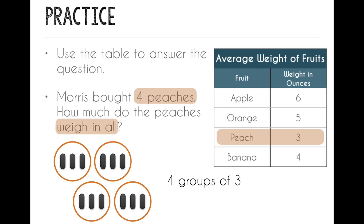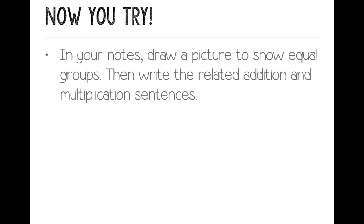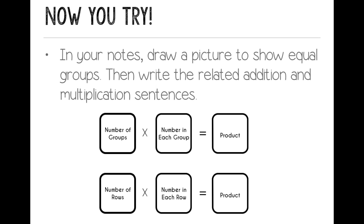And if I use repeated addition, I would add three plus three plus three plus three. And if I multiply, I would multiply four times three and get a product of twelve. And I multiply four times three because I have four groups of three. So my four comes first. That's my number of groups. And then I multiply by three, or the number in each group. So I would be able to say that the peaches weigh twelve ounces. Now you try. In your notes, draw a picture to show equal groups. Then write the related addition and multiplication sentences. See everyone tomorrow! And remember, the number of groups times the number in each group equals your product when you're writing your multiplication sentence.